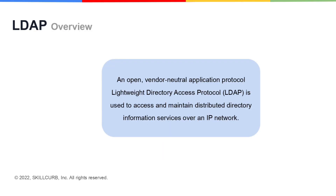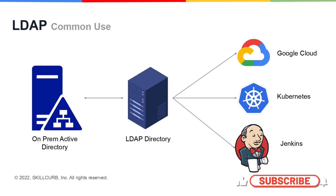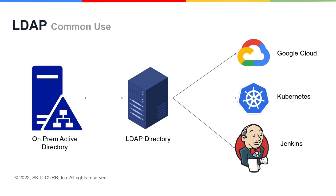An open, vendor-neutral application protocol called Lightweight Directory Access Protocol, or LDAP, is used to access and maintain distributed directory information services over an IP network. LDAP is frequently used to facilitate same sign-on by giving users a central location to store their usernames and passwords. Users can use the same ID and password using same sign-on, but they must enter it each time they wish to log in. You can have an on-premises Active Directory server synchronize with an LDAP directory so you can access things like Google Cloud, Kubernetes, and Jenkins.